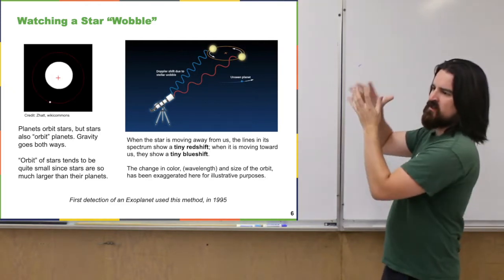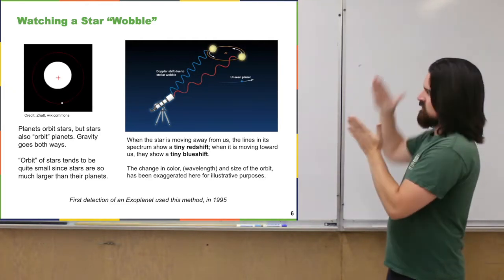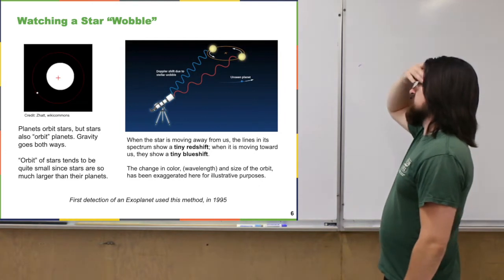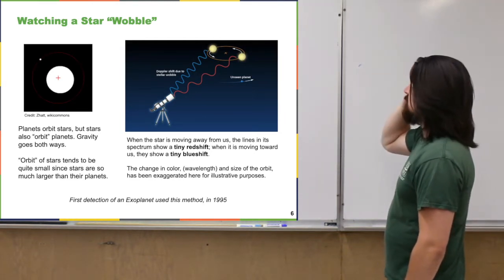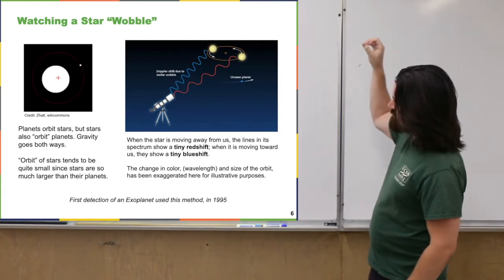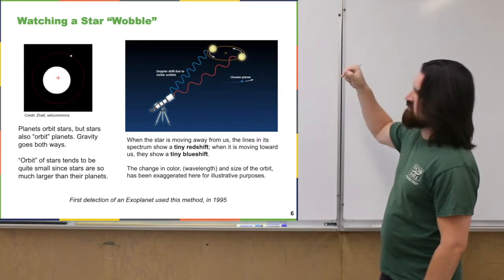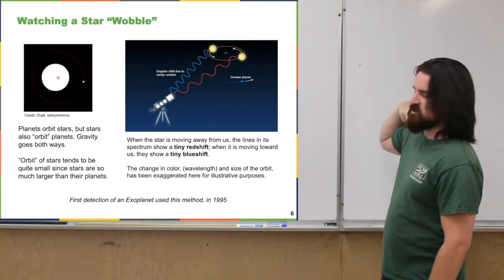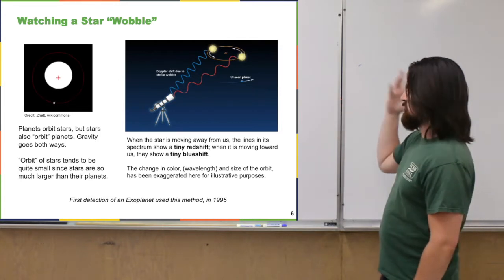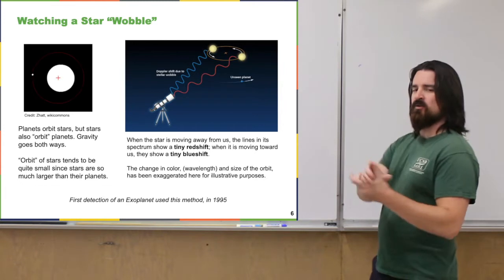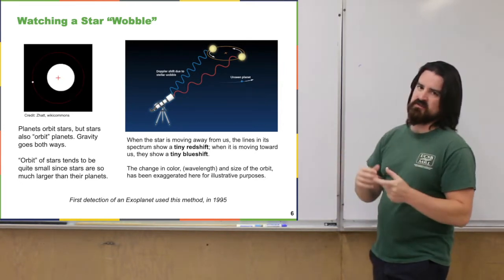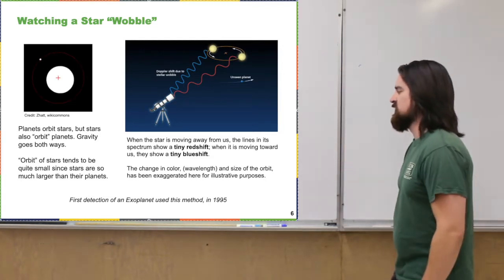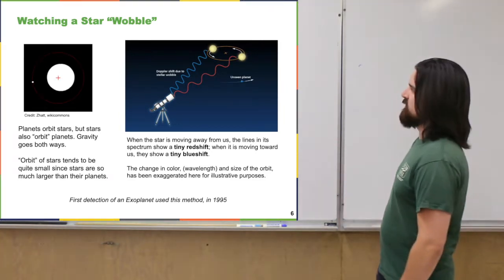The animation shows how a planet going around a star — even though the star is much bigger — actually causes the star to orbit a little bit, a sort of wobble. That animation is rather exaggerated; the motion of the star is very tiny. With the understanding that stars wobble a little bit, we recall that when an object moves away from or towards us it has a Doppler shift. When the star is moving towards us its spectrum is blue-shifted to shorter wavelengths; when moving away it's red-shifted to longer wavelengths. These shifts are very tiny but we've developed sensitive technologies to measure them — and that's how we detected the first exoplanet in 1995.